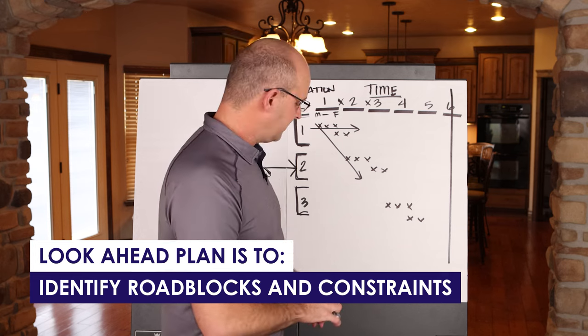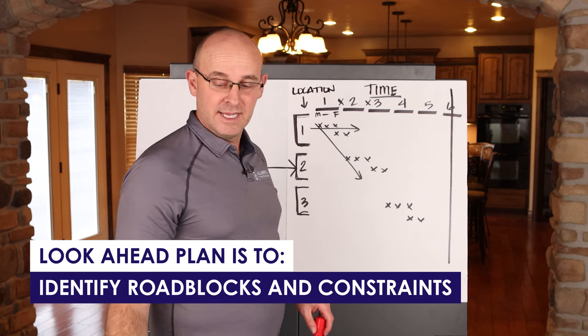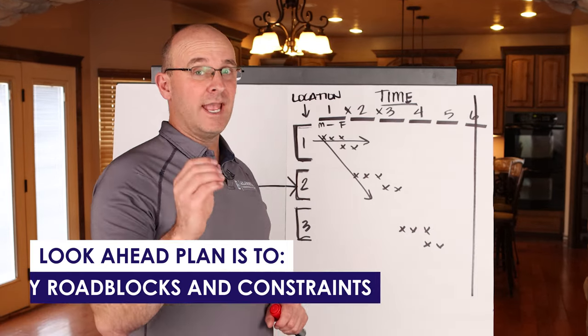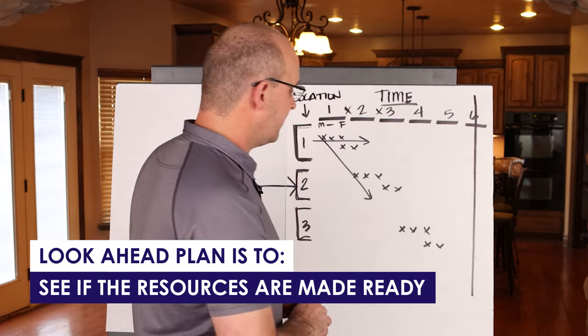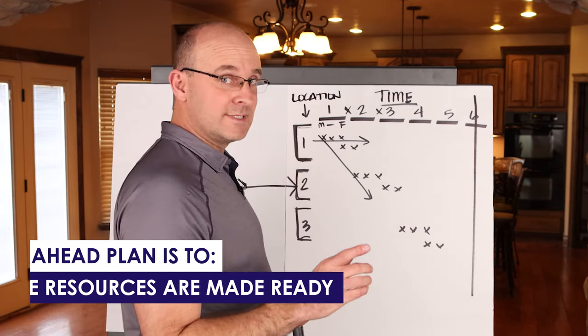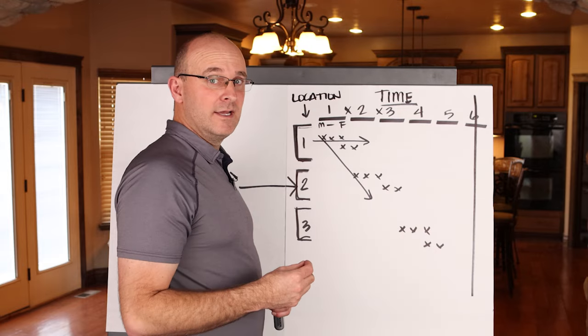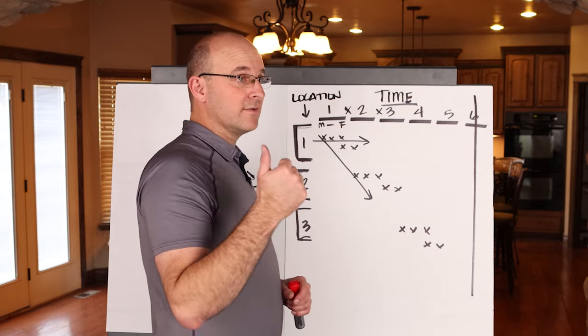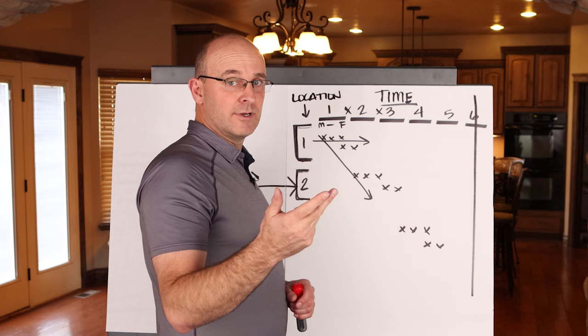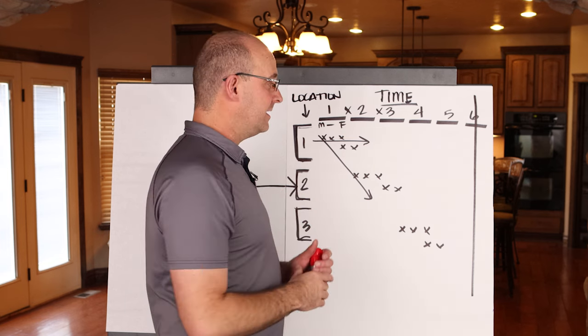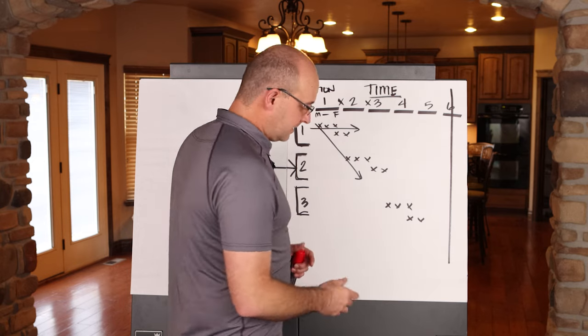Similar to the weekly work plan, your look-ahead plan is specifically to identify roadblocks and constraints and to see if our resources are made ready. If every six weeks out you are looking at each activity and saying, do I have the labor, the materials, the equipment, the permissions, the layout, the information, everything I need, and if the answer is yes, then that's great.